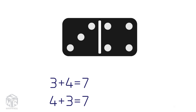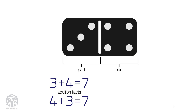3 plus 4 equals 7 and 4 plus 3 equals 7 are called related addition facts because we get the same sum using different orders. Note that we add two parts to find the whole. How can you use an addition fact to find the answer to a subtraction fact? Subtraction is the opposite of addition. We can subtract one part from the whole to get the other part.